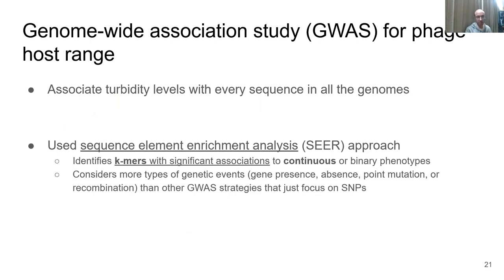Now that I've done these high-level associations and checked for phylogenetic bias, I performed a genome-wide association study for phage host range. The goal is to associate the turbidity levels measured for each strain with every unique sequence in all the genomes. I used the sequence element enrichment analysis, or SEER approach, which identifies K-mers with significant associations to continuous phenotypes. A K-mer is a subsequence of length K, and the advantage of associating K-mers versus just a SNP is you can look at more kinds of genetic events — gene presence, absence, point mutations, or recombination events — that all could have causative effects on host range.